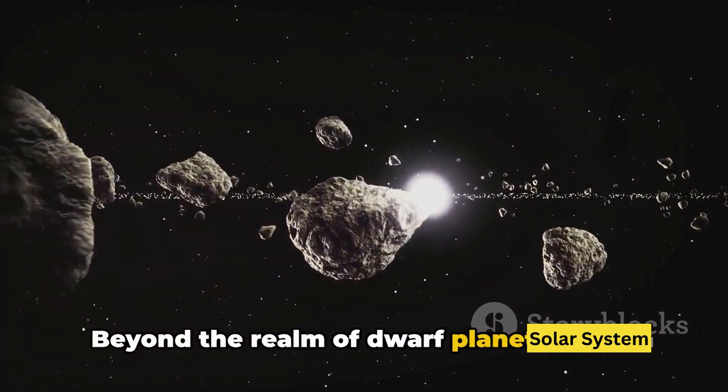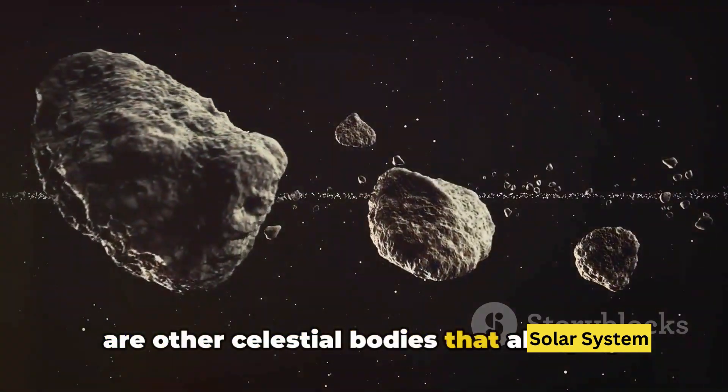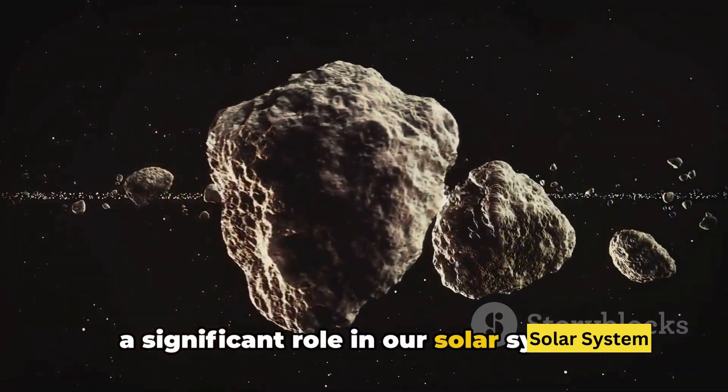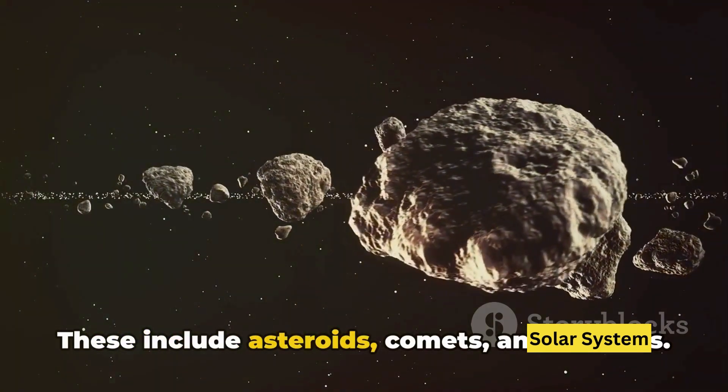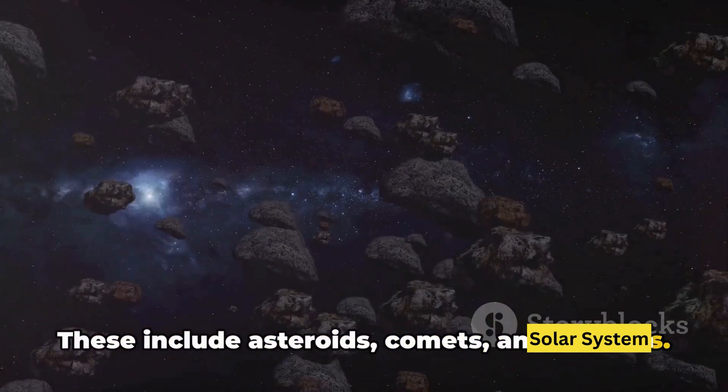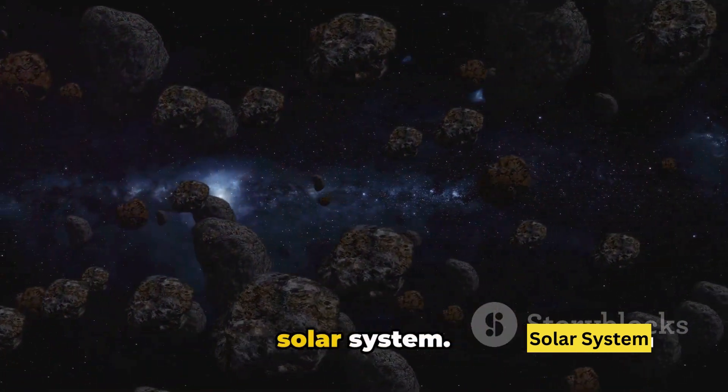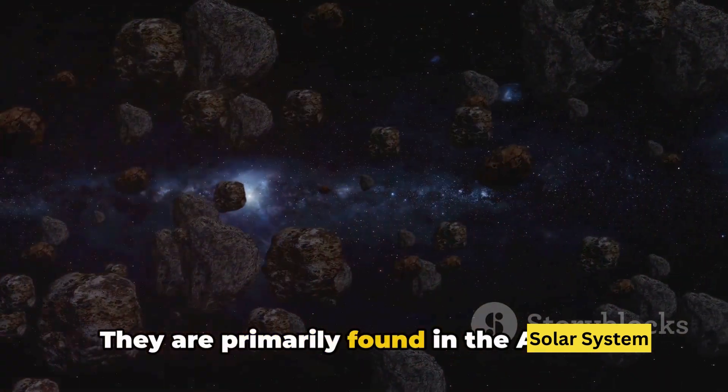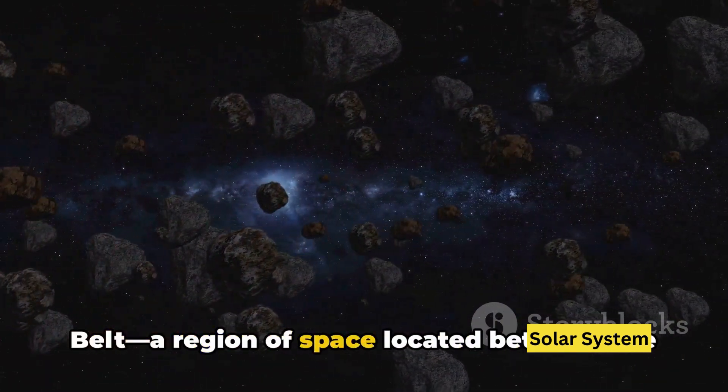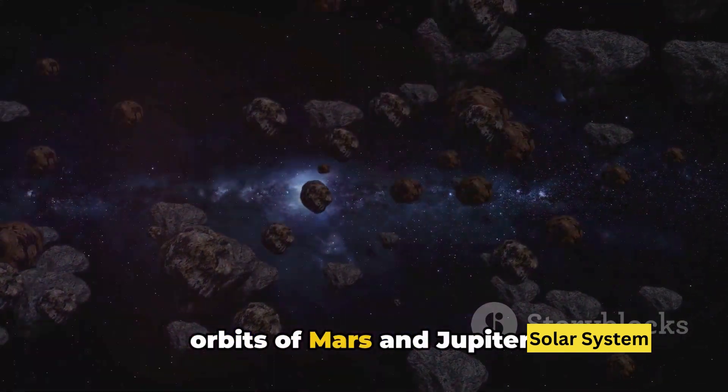Beyond the realm of dwarf planets, there are other celestial bodies that also play a significant role in our solar system. These include asteroids, comets, and meteors. Asteroids are rocky, airless remnants left over from the early formation of our solar system. They are primarily found in the asteroid belt, a region of space located between the orbits of Mars and Jupiter.